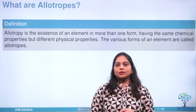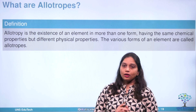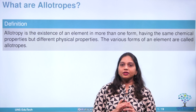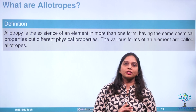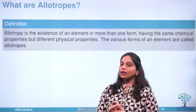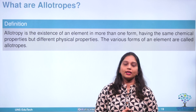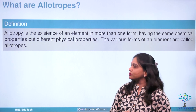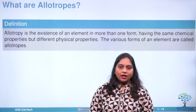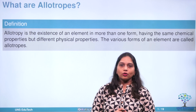Allotropy is a particular character for an element. Allotropy is the existence of a particular element in various physical forms but the chemical properties remain the same. All these different forms are called allotropes.